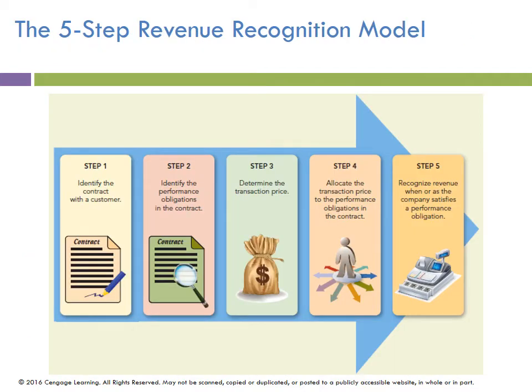The five steps to revenue recognition — these are very new, they came out in the last five years. We get very specific with when and how we determine revenue. In step one, we identify the contract. Is there a contract with the customer? In step two, we identify what we have to do in that contract — what are the separate performance obligations? In step three, we determine what's the transaction price overall on the contract. Step four, we allocate that transaction price to the different performance obligations. And then as we complete the various performance obligations in the contract, that's when we recognize revenue.